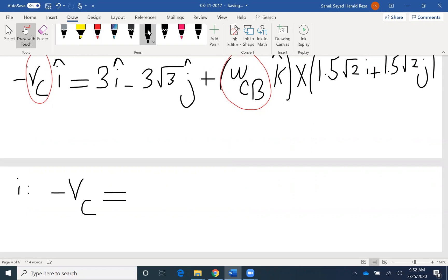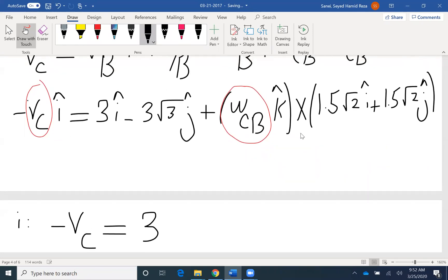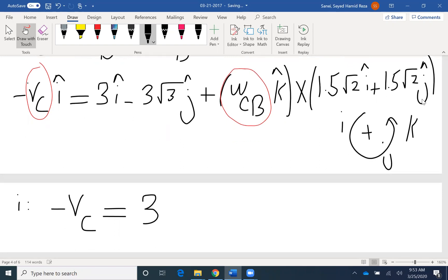For the I component, let's write the I component. Here on the left side, I have negative VC. On the right side, I have 3I. Then here I have a cross product that I need to solve for. K cross I gives me J. I'm not interested in that one for now. K cross J gives me I. Because K cross J, I'm moving the opposite direction. K cross J would be the opposite direction clockwise, so the cross product will generate a negative value. So negative omega CB 1.5 square root of 2 omega CB. That's the I component.